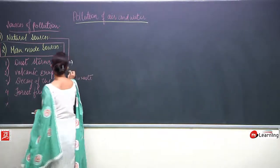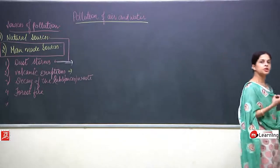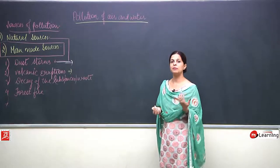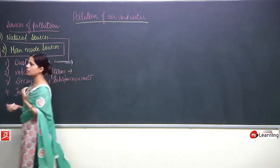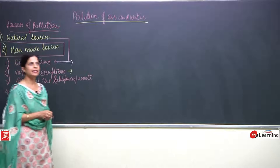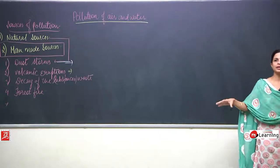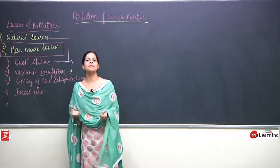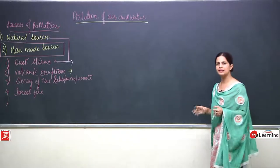The second natural source is volcanic eruptions. When volcanoes occur, due to volcanic eruptions many gases are released and get mixed up with the atmosphere. The lava comes out onto the surface of the earth, and along with that a lot of gases come into the atmosphere, polluting it.